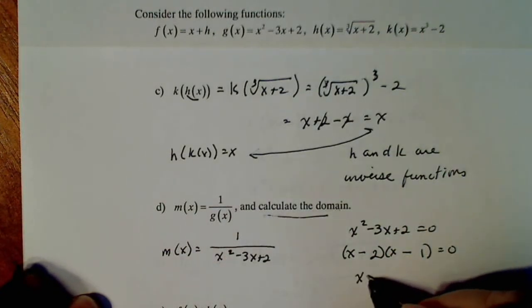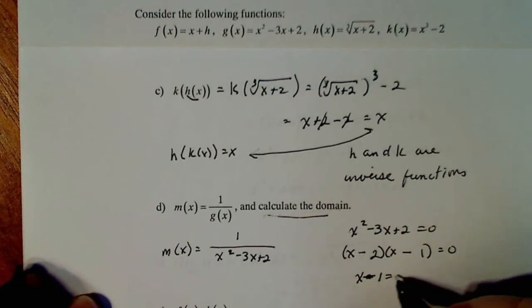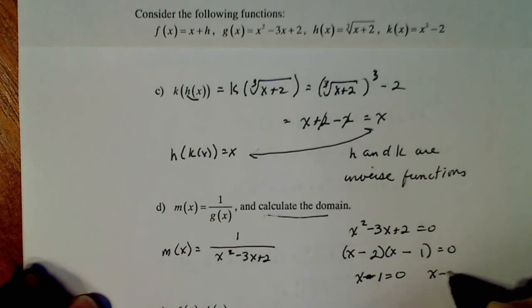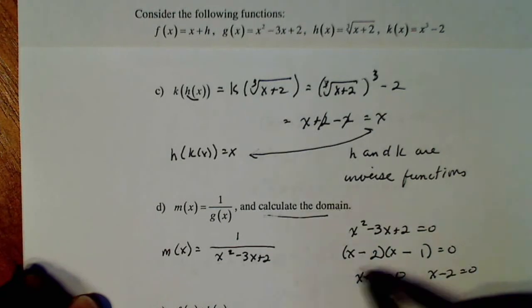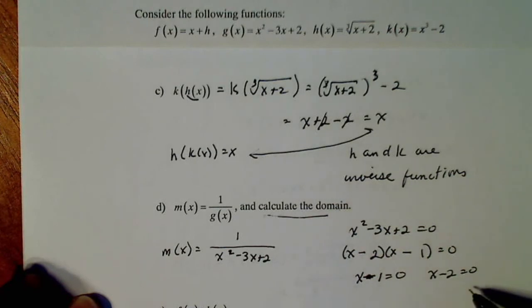This means X minus 1 equals zero and X minus 2 equals zero, because when the product equals zero, either factor can equal zero on its own.